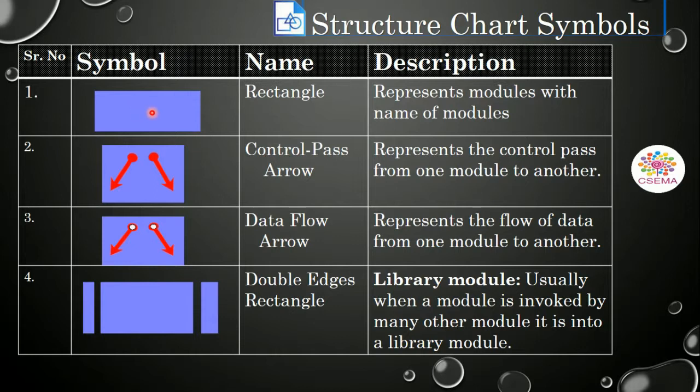And the second symbol that structure chart uses is the control pass arrow. This control pass arrow represents the passing of control from one module to another module in the software system.